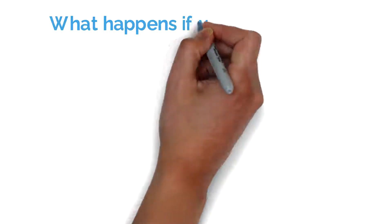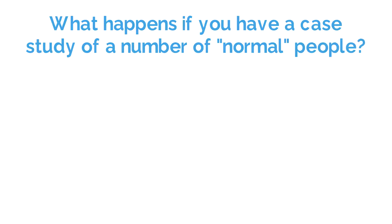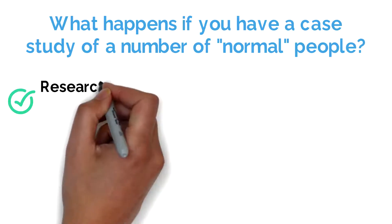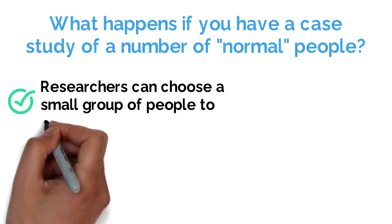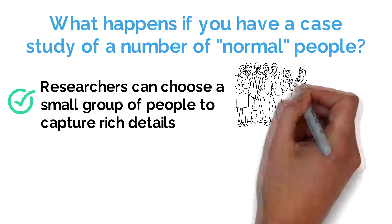Another possibility is having a case study of a number of normal people and how they make decisions at key points in their lives. The researchers might choose a small scale study in terms of number of people in order to capture rich detail and to show some of the complexity in the participants' lives.